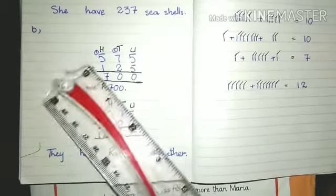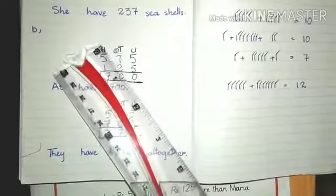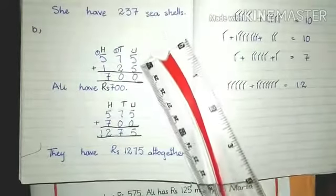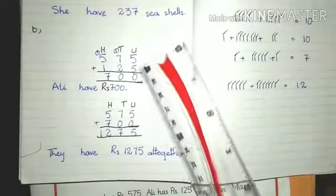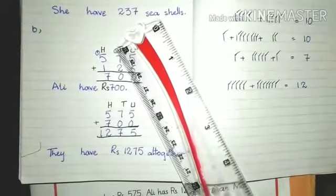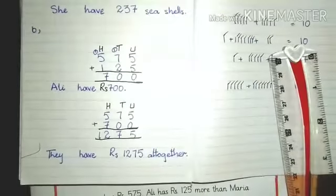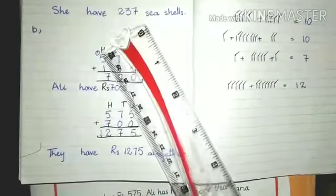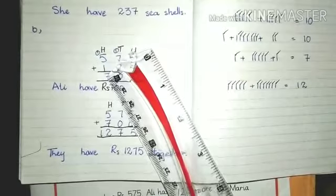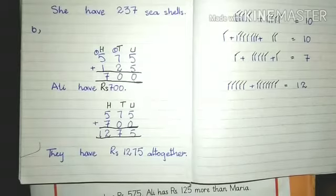So we will add 575 and 125. We will write these numbers according to their place values, means unit, tens and hundreds. Then we will start from unit side. 5 plus 5, we know 5 plus 5 is equal to 10, so we will write 0 here and 1 will go up. Then we will add 1 plus 7 plus 2. 1 plus 7 plus 2 is equal to 10. 0 you will write here and 1 will go up. Then 5 plus 1 plus 1 is equal to 7. It's 700. Means Ali have rupees 700. Ali ke paas ab 700 rupay hain.